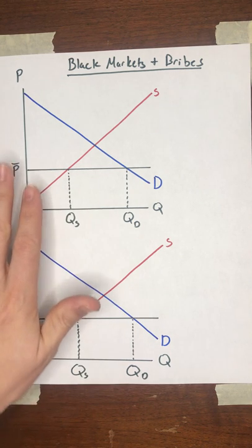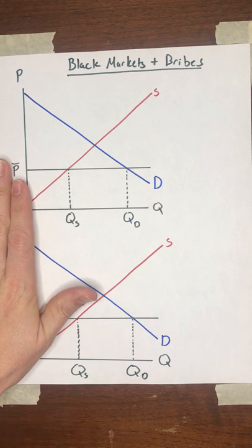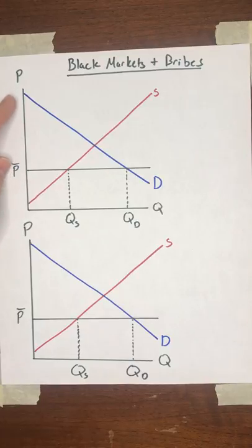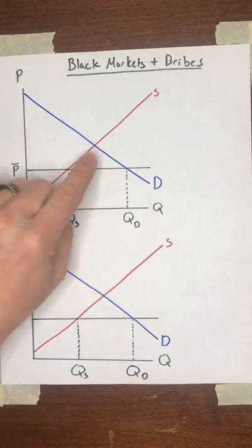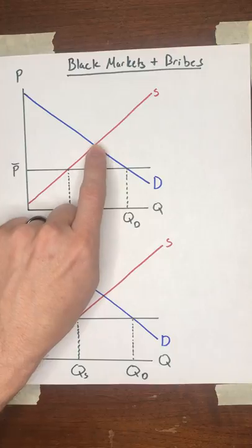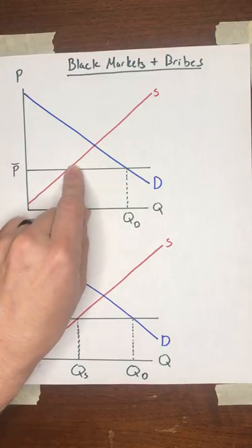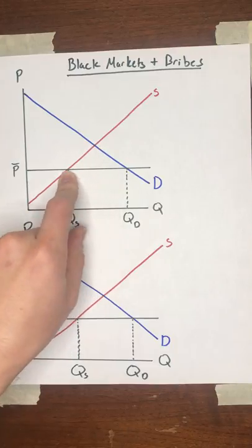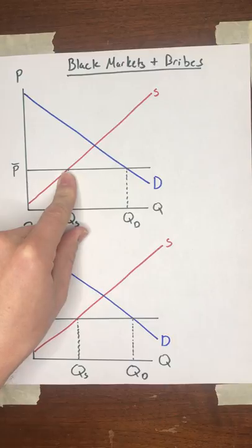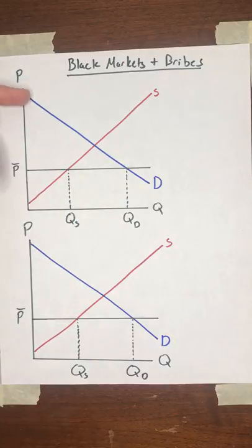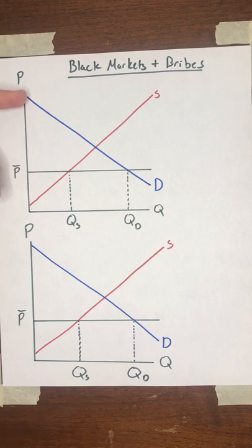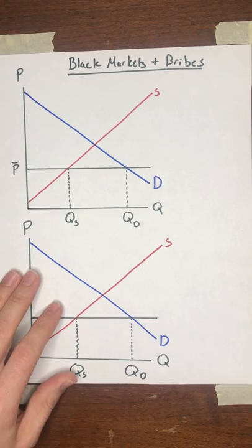First of all, let's think about what the goal is of a price ceiling. Effectively, when a government imposes a price ceiling, they're saying the market price, the equilibrium price, is too high. We want to push that price down, and the intended effect of that is going to be to push more of the surplus in this market towards the consumers and away from the producers.